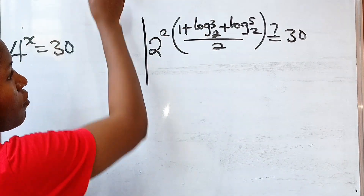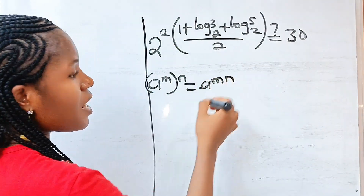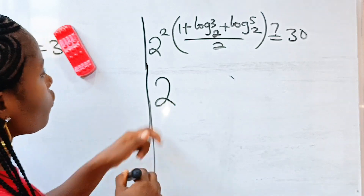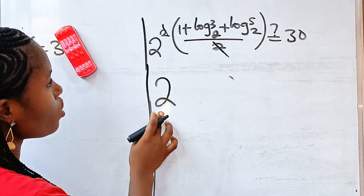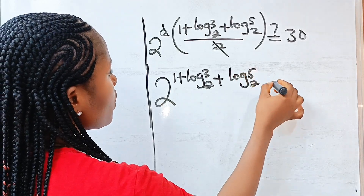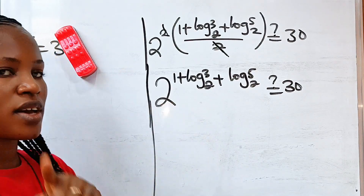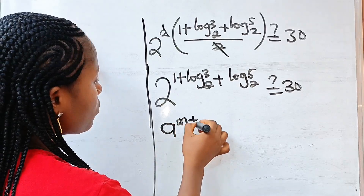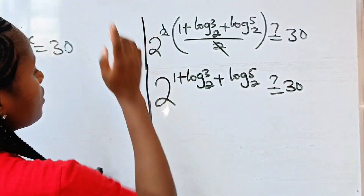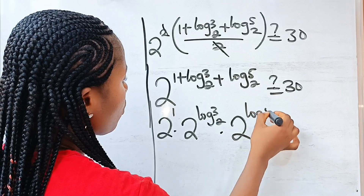Remember that when you have a^m raised to the power of n, this equals a^(m×n). So we have 2 to the power of 2 multiplied by (1 + log₂3 + log₂5)/2. The 2s cancel, leaving 2 to the power of (1 + log₂3 + log₂5). Using the law a^(m+n) = a^m × a^n, this becomes 2¹ × 2^(log₂3) × 2^(log₂5).